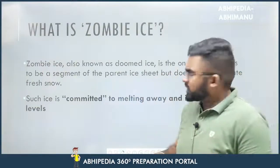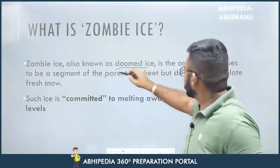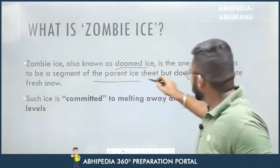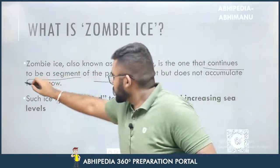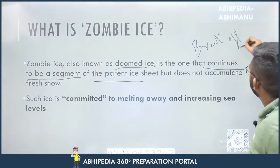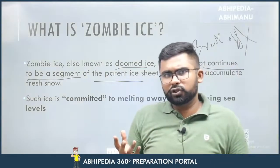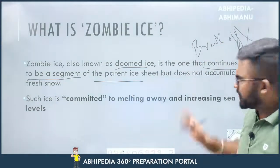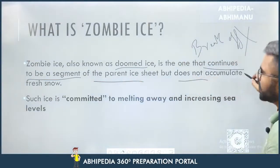What is Zombie Eyes? Zombie Eyes, also known as Doomed Eyes, is ice that continues to be a segment of the parent ice sheet — it does not break off. The key point to note is that it continues to be a part of the parent ice but does not accumulate fresh snow.